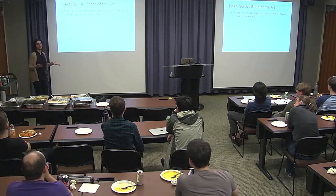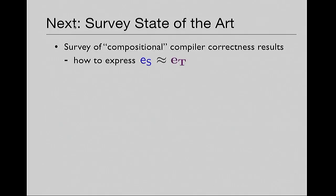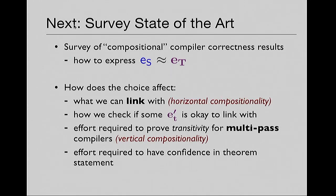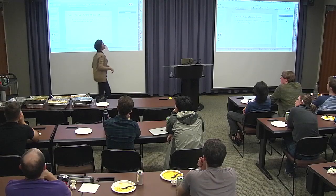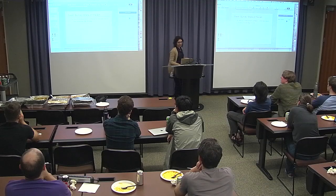So I'm going to start with a survey focusing on how different compositional compiler correctness results specify this equivalence. All of the papers on compositional compiler correctness must allow linking with target code. In the literature, linking is often referred to as horizontal compositionality — you can compose your target code with some other code, and on the other side, compose your source code with something. All compositional compiler correctness results have to have that.